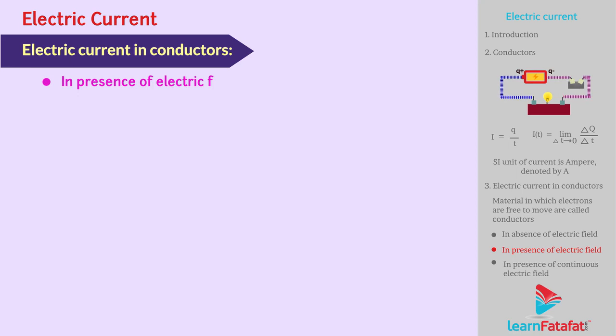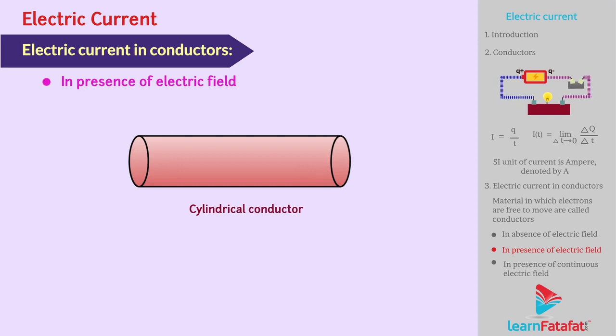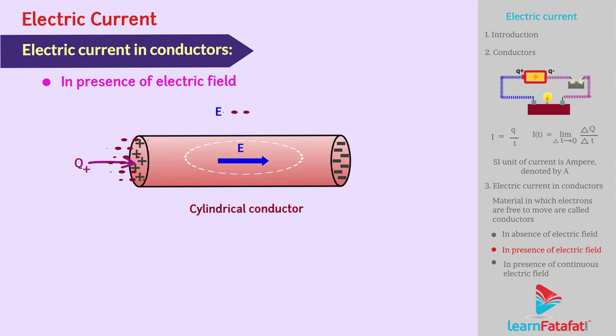In presence of electric field. Say an electric field is applied on a piece of cylindrical conductor. Suppose two circular discs, say positively charged, is placed at one end of the conductor and negatively charged at the other end. Hence, an electric field is created from positive to negative charge. Electrons are accelerated due to this electric field towards +Q in order to neutralize their charge.